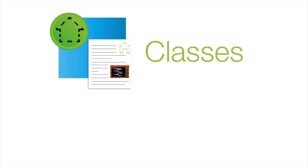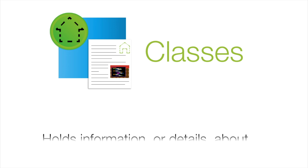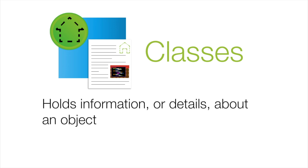A class is a definition for an object. All objects are created from classes and can't exist without them. A class holds information or the details about an object. In object-oriented programming, classes are used like a blueprint or a template to create new objects from.